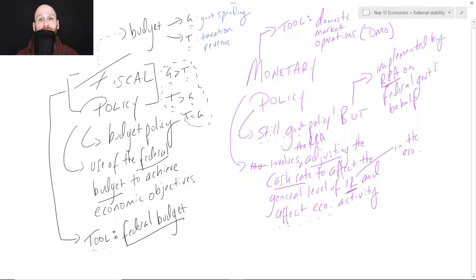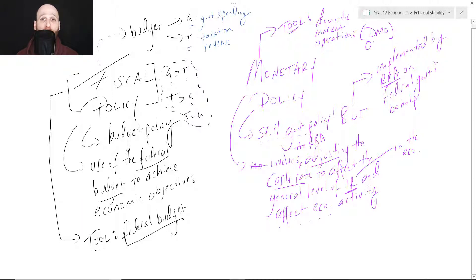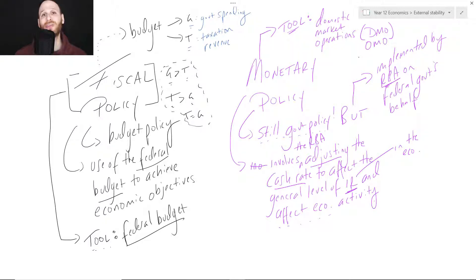The tool of monetary policy — you remember the tool of fiscal is the federal budget — the tool of monetary policy is domestic market operations. You could also refer to open market operations. And that's the physical process of how the RBA seeks to adjust the cash rate to then affect the level of economic activity.